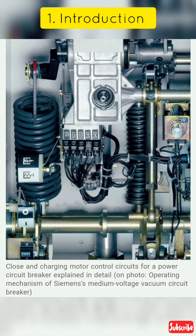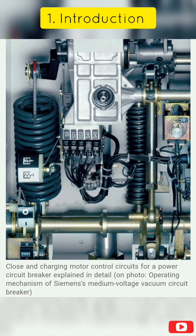The most reliable source in a utility electric generation station is a DC source from a station battery system. Even on a loss of all AC power in the power plant, the battery voltage is maintained and the breakers are able to provide their circuit protective functions.